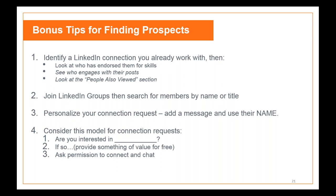Personalize your connection request — add a message and use the person's name. When you send a request, you have the option to send nothing, but that's not the most you can do. Leave a message: are you interested in X? Offer something free — maybe a white paper, a rate sheet, or a recording of a presentation. You're giving something for free, then asking permission to connect. People feel reciprocity and you're much more likely to get a connection accepted.